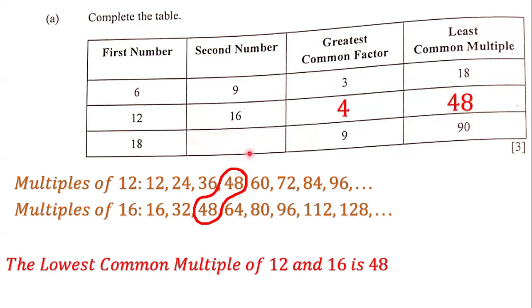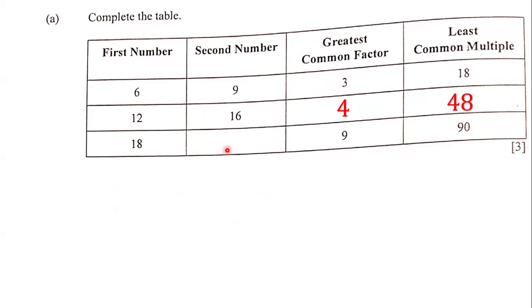Now we have to figure out the missing number in the last row. We already know the first number is 18, and we have to find the second number. The hints given are: the greatest common factor between 18 and this missing number is 9, and the lowest common multiple between 18 and the second number is 90.